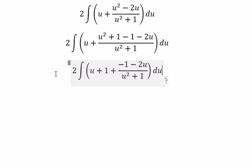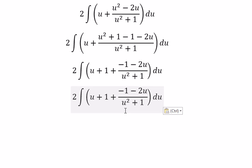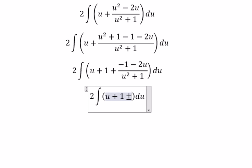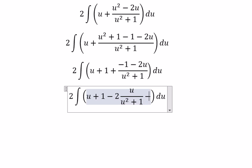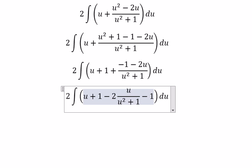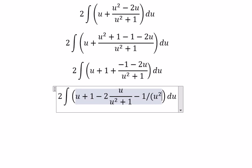And now for this one we can separate this one into two fractions. That's about negative 2 multiplied by u over u squared plus 1. And the next one is about negative 1 over u squared plus 1.